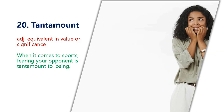The tenth word is tantamount, meaning equivalent in value or significance. For example: when it comes to sport, fearing your opponent is tantamount to losing, meaning if you fear your opponent you are bound to lose — it is equal to losing. In this picture we can see a girl who is being fearful and anxious.